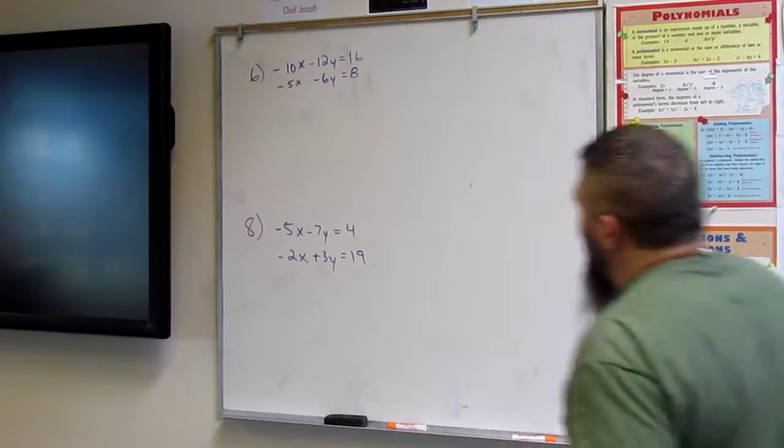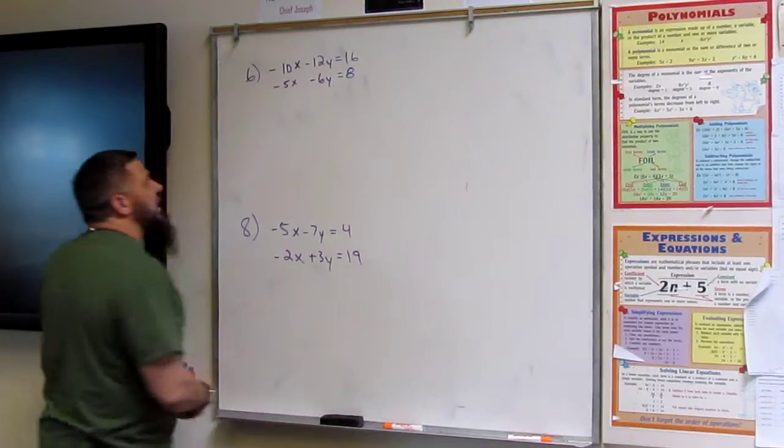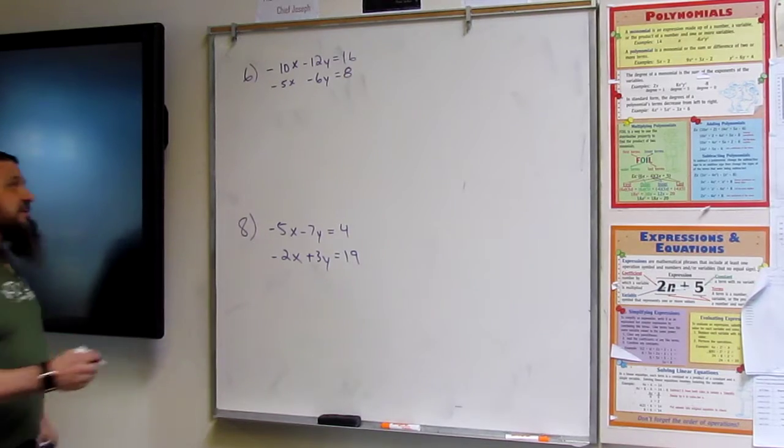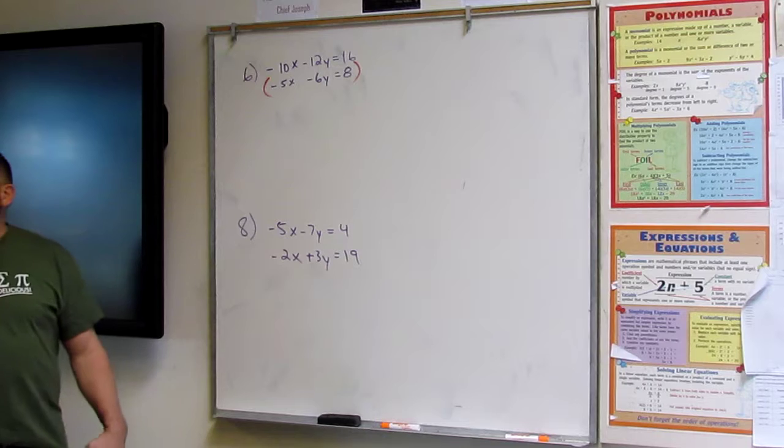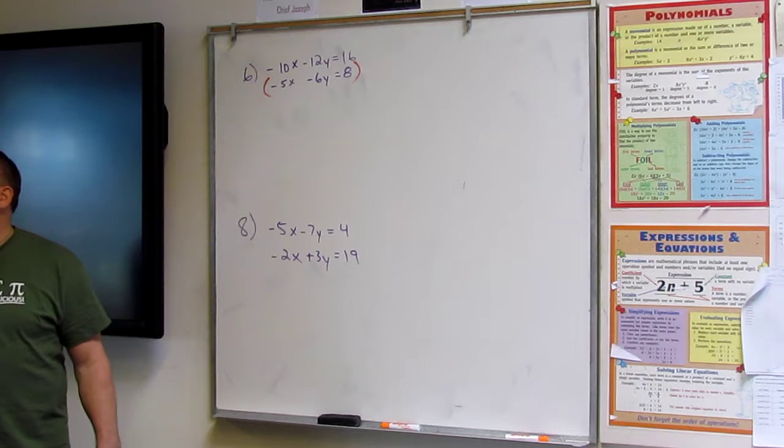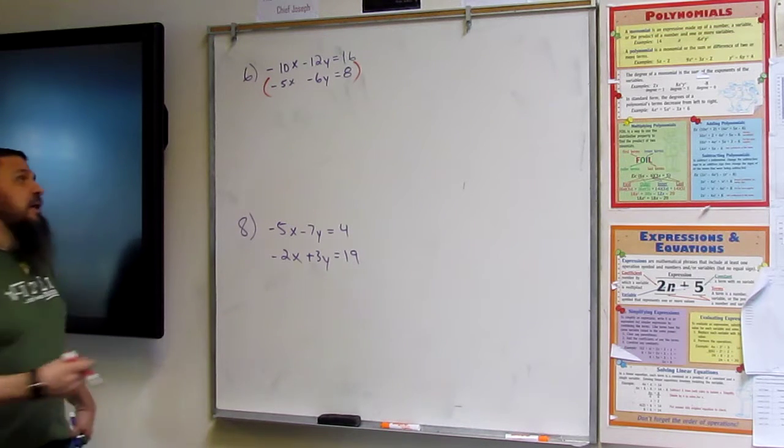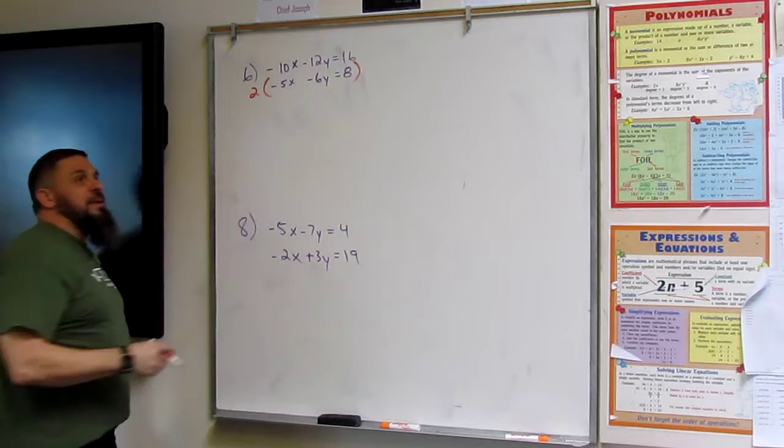Okay, it sounds like you want to get rid of the Y's, you say. So the key here is how many times does 6 go into 12? Two times. So then we're going to multiply by a 2.